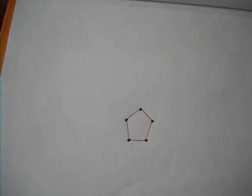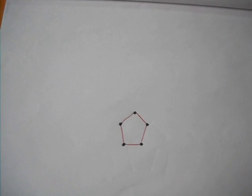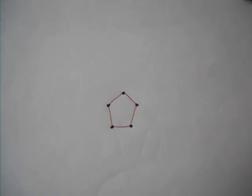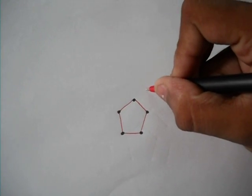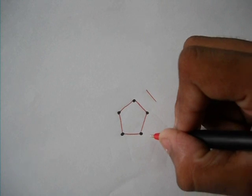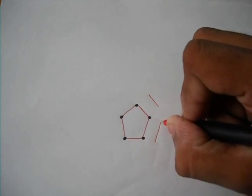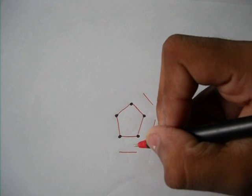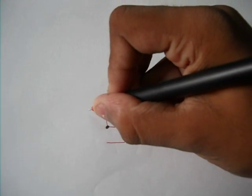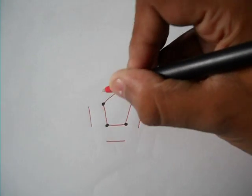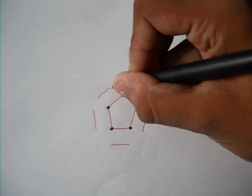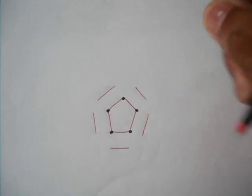After we have drawn this pentagon, we have to start by drawing lines parallel to the lines or sides of the pentagon. Okay, so we have drawn them.